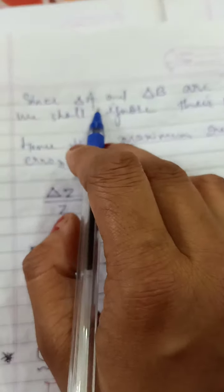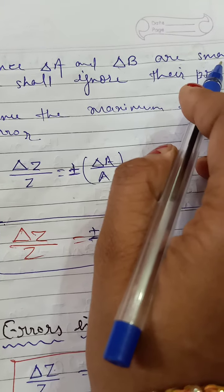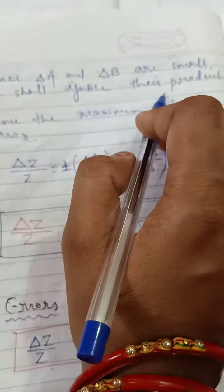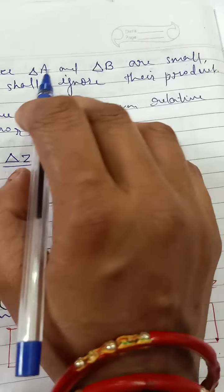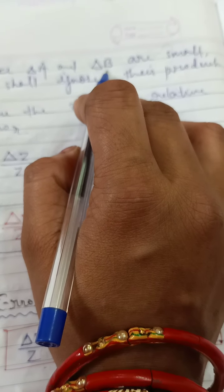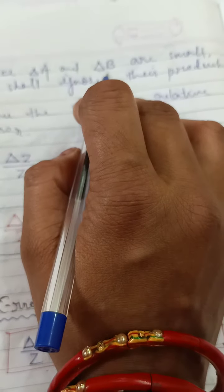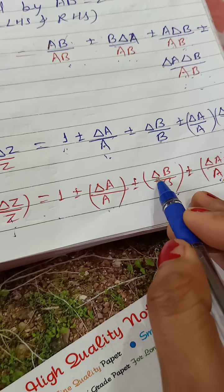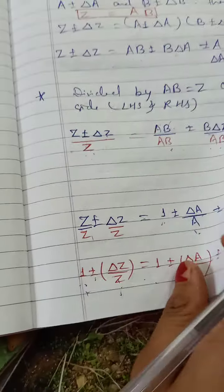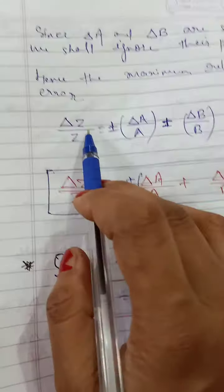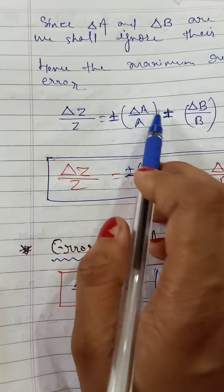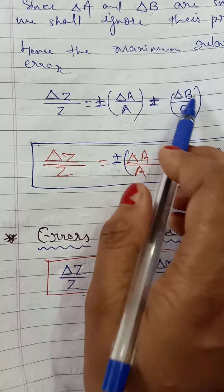Since delta-a and delta-b are very small values, we shall ignore their product — we neglect that term. So what do we get? Delta-z upon z is equal to plus minus delta-a upon a, plus minus delta-b upon b.